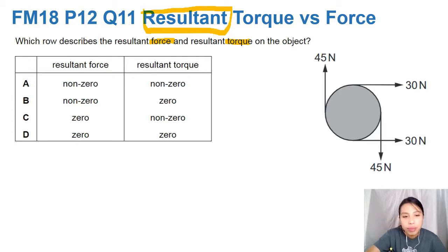Resultant force is this one, sum of F. Resultant torque is sum of Tau or T. So how do you differentiate between both? Take a look at the diagram.